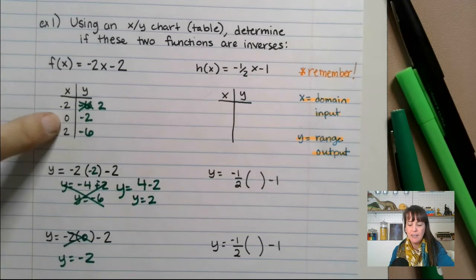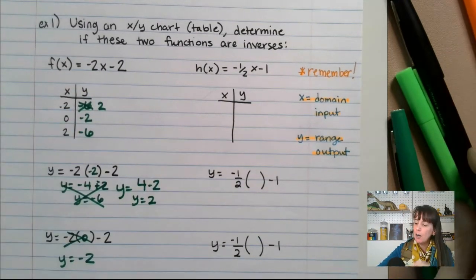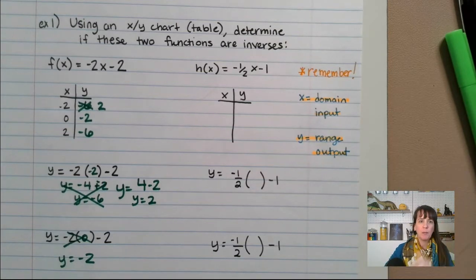So we put things into our machine, we get things out. We put in negative two, zero, two. We got out two, negative two, negative six. When you're talking inverses, we flip our domain and our range.